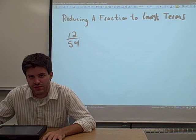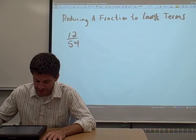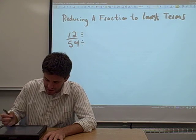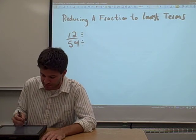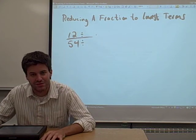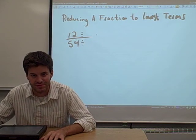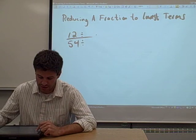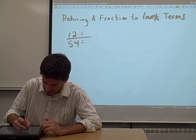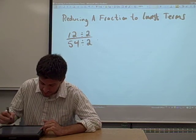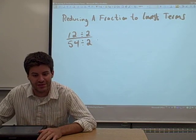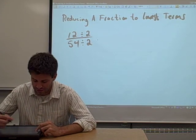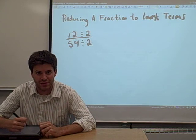What we're allowed to do in a fraction is we're allowed to divide both the numerator and the denominator by the same number. So what we can do is we can pick a number that will divide evenly into both 12 and 54 in this case. For example, there's more than one thing that you could choose, but I noticed that 2 divides evenly into both 12 and 54, and we're allowed to divide both the numerator and the denominator by that number.